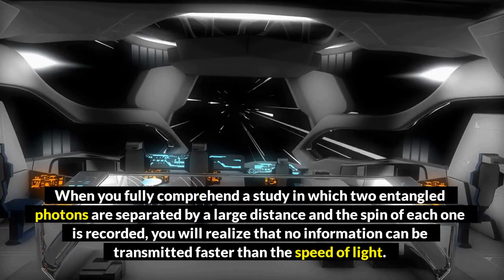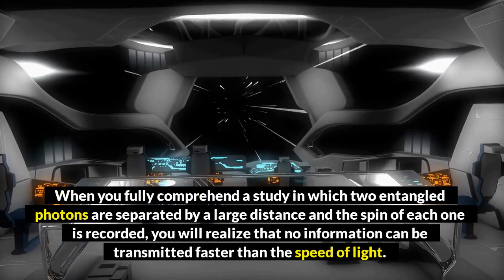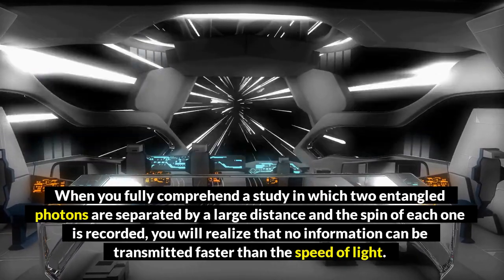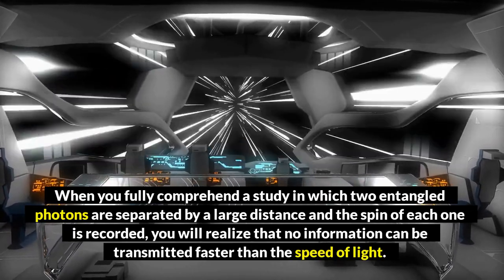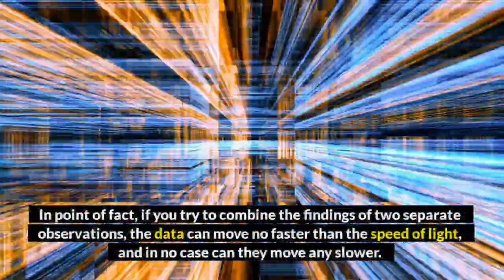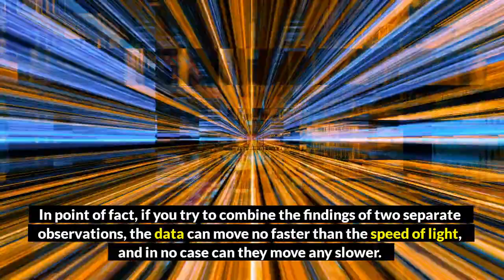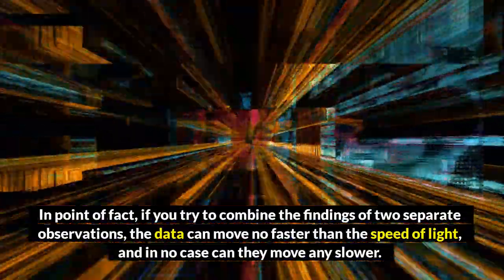When you fully comprehend a study in which two entangled photons are separated by a large distance and the spin of each one is recorded, you will realize that no information can be transmitted faster than the speed of light. In point of fact, if you try to combine the findings of two separate observations, the data can move no faster than the speed of light, and in no case can they move any slower.